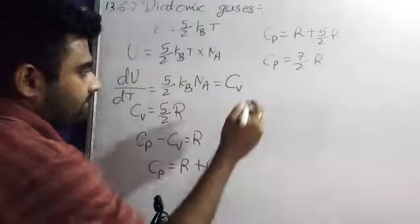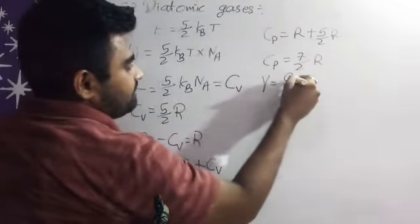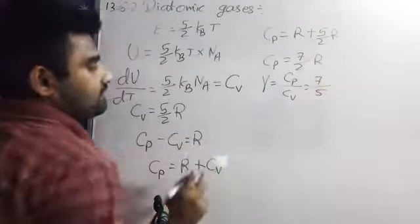Now we can find for gamma, so gamma is equal to Cp upon Cv, it will be 7 by 5, right?